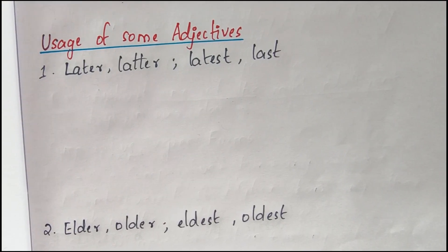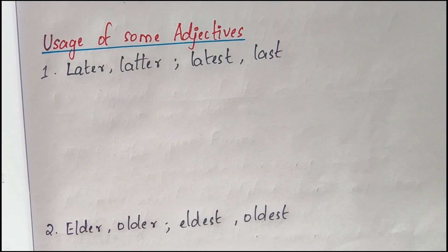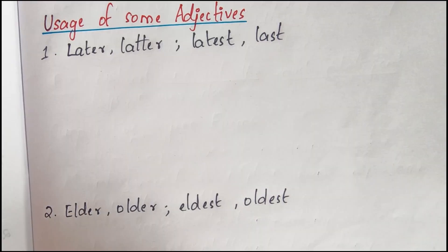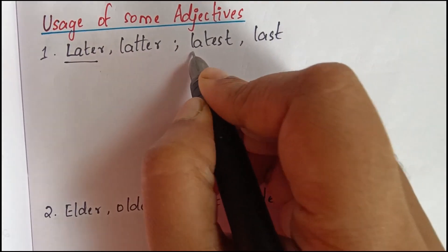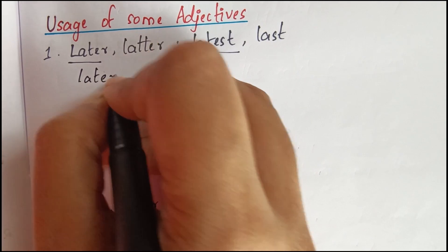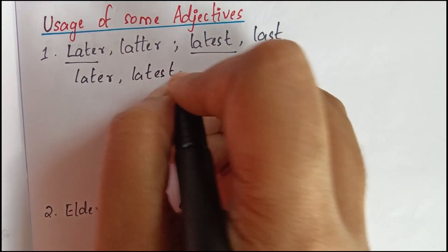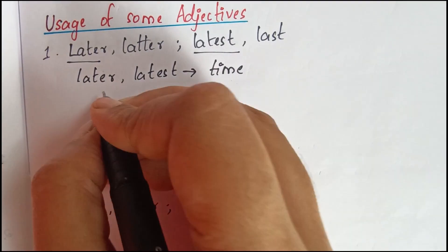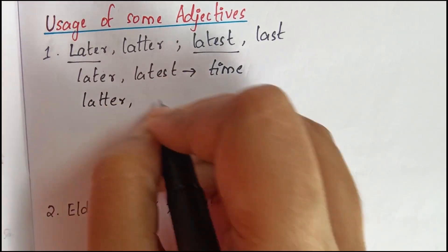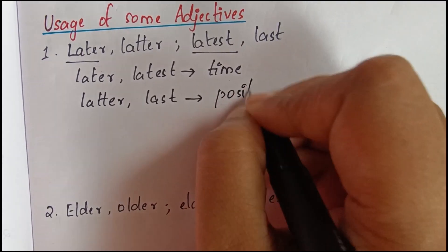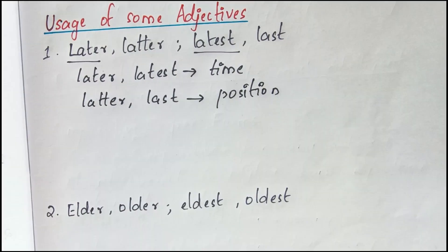Now we can look at the usage of some adjectives. First is: later, latest, latter, and last. Later and latest are both used to refer to time, while latter and last are used to refer to position.